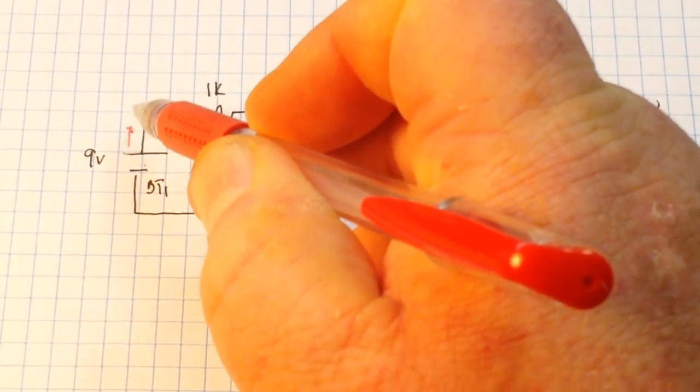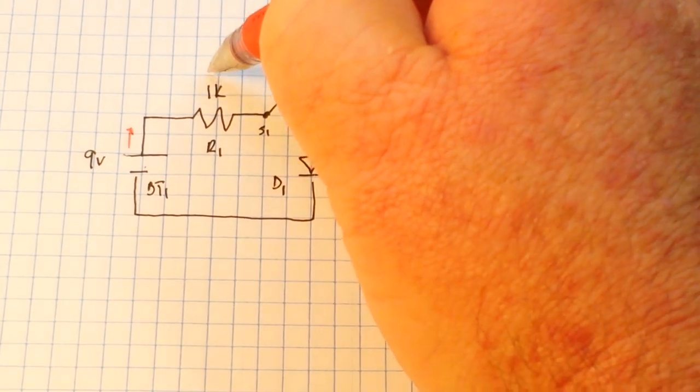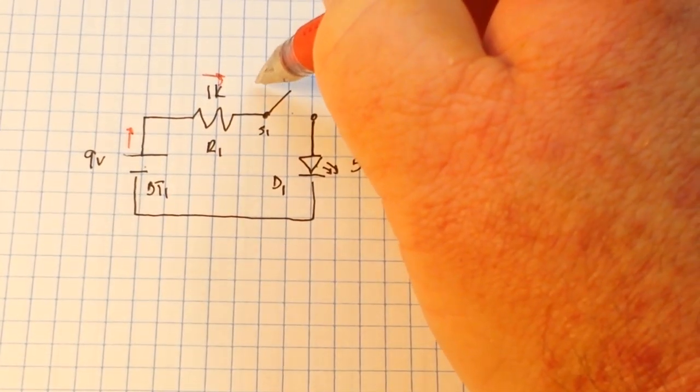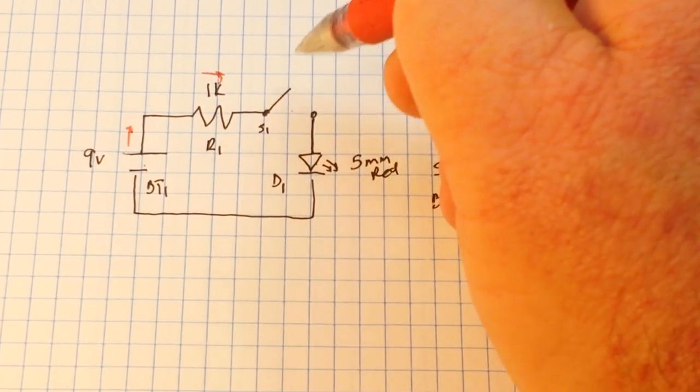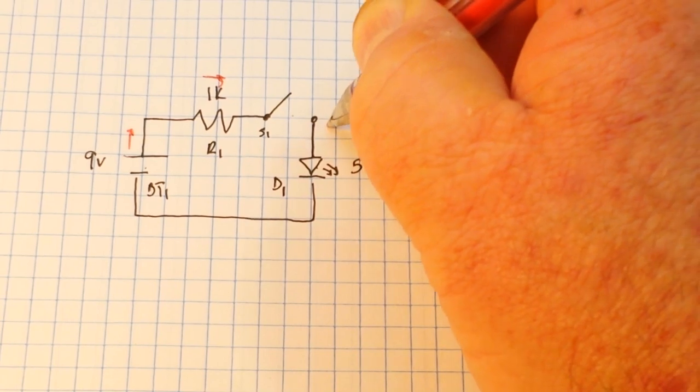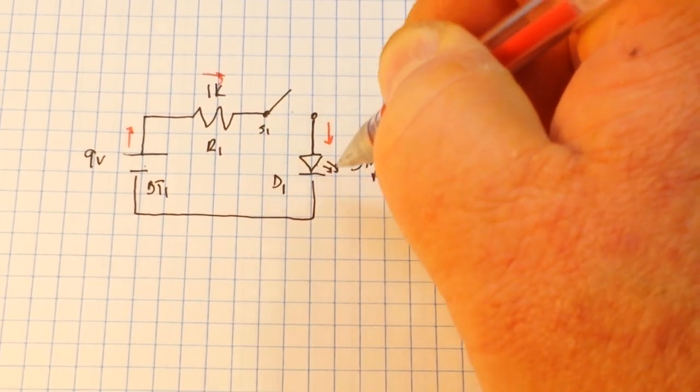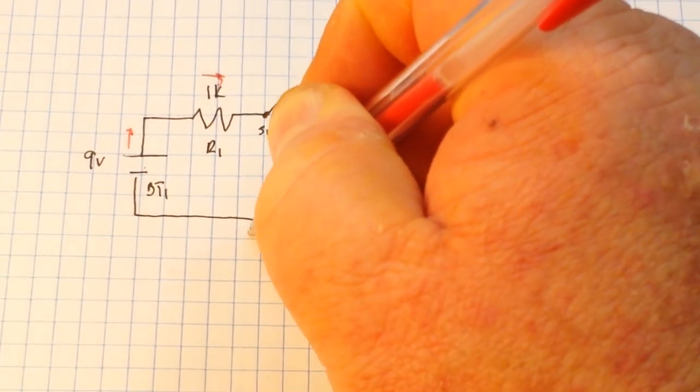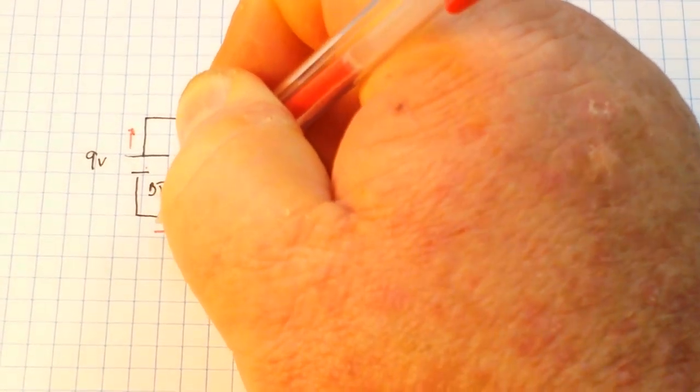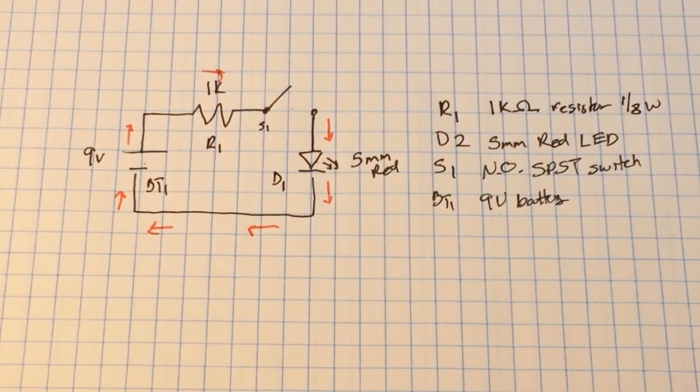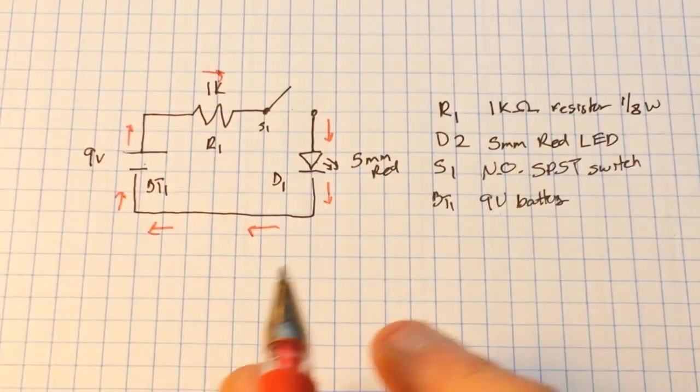And then we're just going to talk about conventional current flow and not electron flow. So let me grab a different color pen. Okay, so how is our current flowing? Battery going from the positive terminal of the battery through the resistor, and in this case it's stopping at the switch.